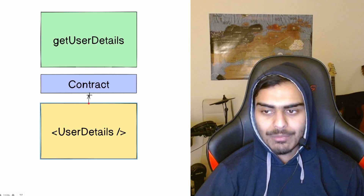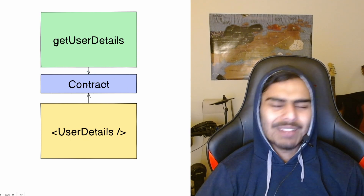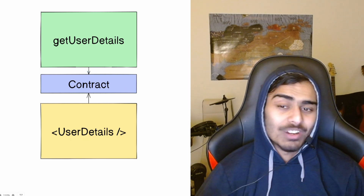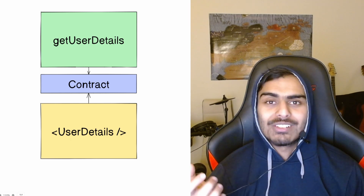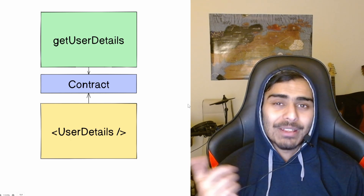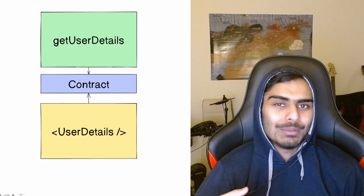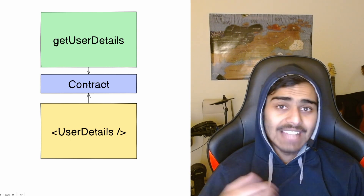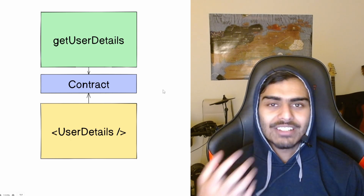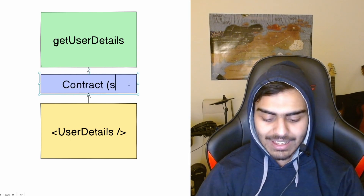The way to solve coupling is to create a new thing in between — let's call this a contract. Your UserDetails component can couple to the contract, and your getUserDetails can also couple to the contract. You might ask: didn't I make things worse? Before, two things were coupled. Now three things are coupled. This is where another concept must be introduced: stability.